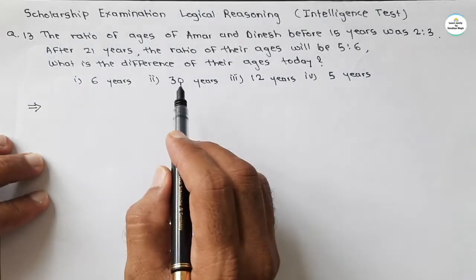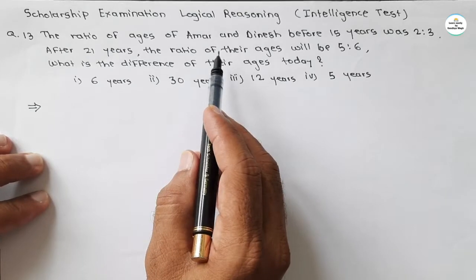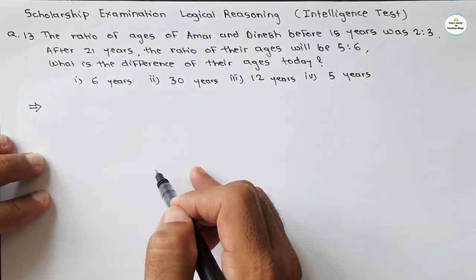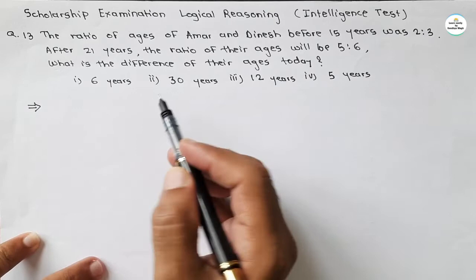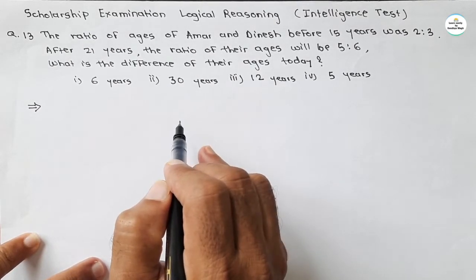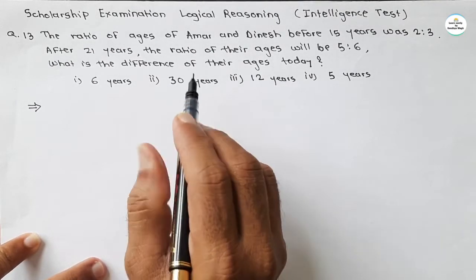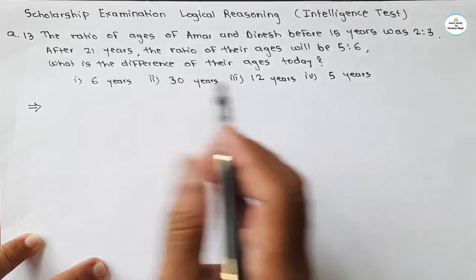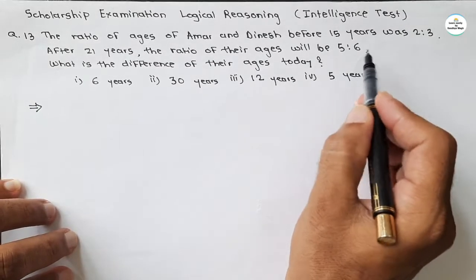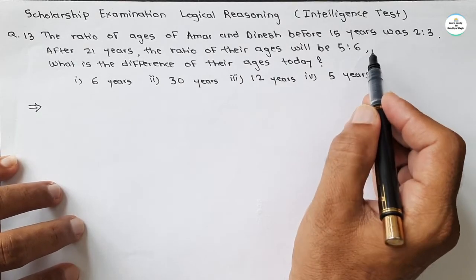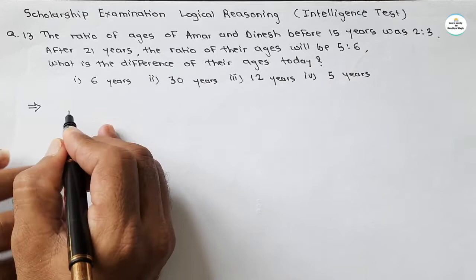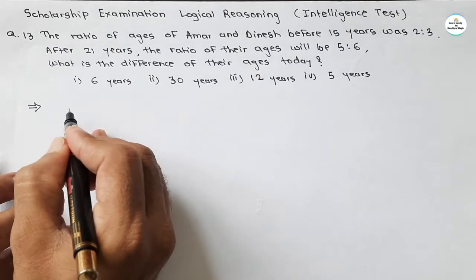Sums like this type can be solved by using the basic method, and in the previous video this type of question I have solved by the basic method. Now here we will see a different method. When a ratio is given, there is always a common multiple factor. So let's assume x as a common multiple factor.